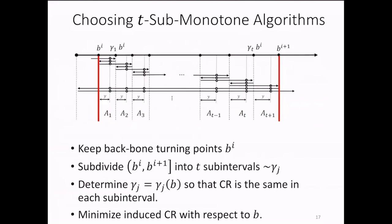And this is how we arrive at the notion of a T sub-monotone trajectory. And such a trajectory is identified by the backbone sequence of turning points that increase geometrically exactly as before as well as by T many detours given by equally many parameters that here I denote by gamma sub-j ranging between zero and one. Now choosing the parameters is done by a highly technical argument. The main idea is the following.